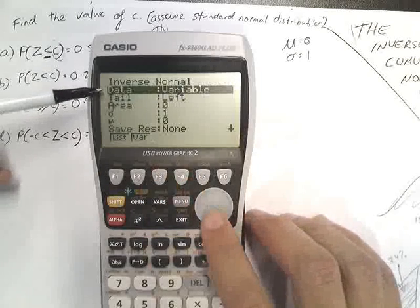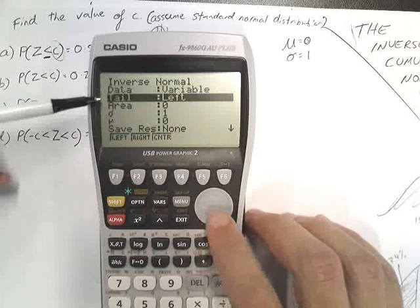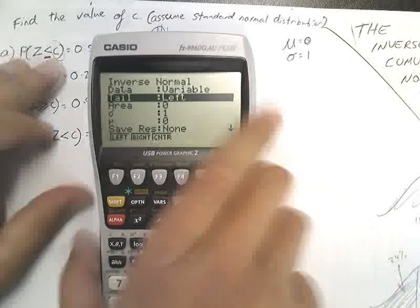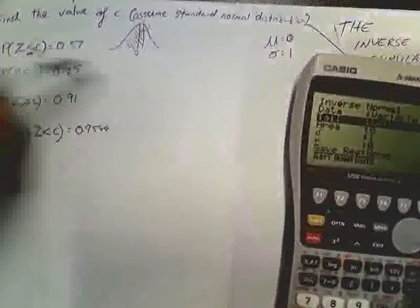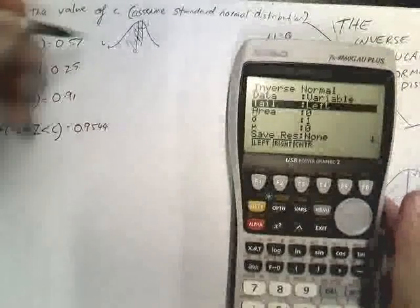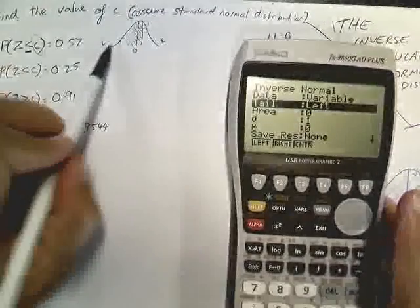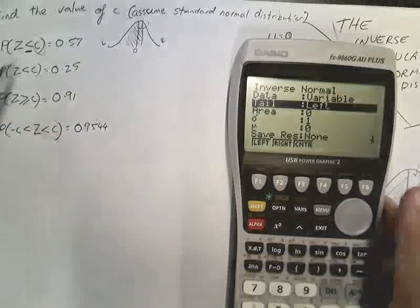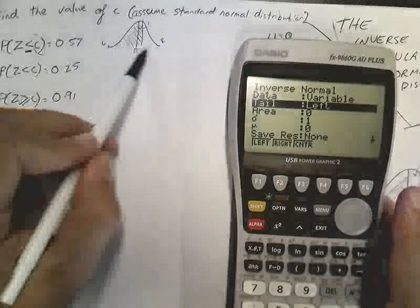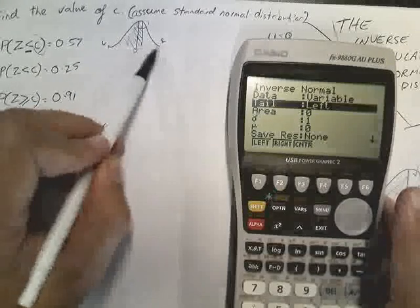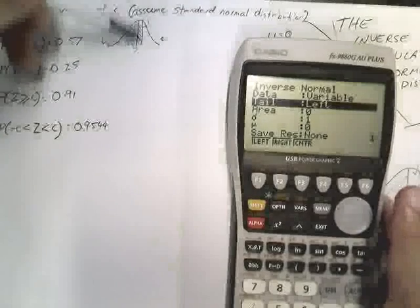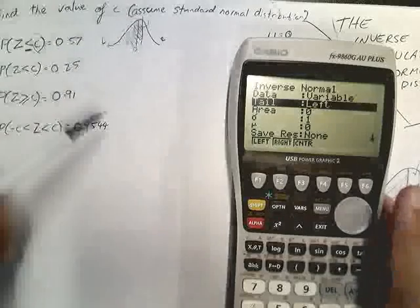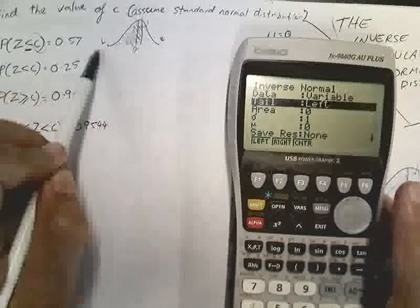Now, we've used NCD previously. We're going to use the inverse normal this time. Now, your data needs to be variable, not list. Now, this is important. Tail. Left tail, right tail, or center. So, you can see here, if this is our left tail, and this is our right tail, we want to know about stuff moving towards the left tail. Now, if that was a greater than sign, we'd be doing things moving towards the right tail. We'll also look at one where you use the center tail as well. Not really a center tail, but a center. So, anyway, this question here is a left tail question.